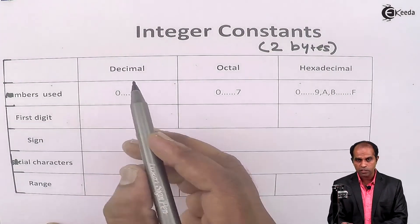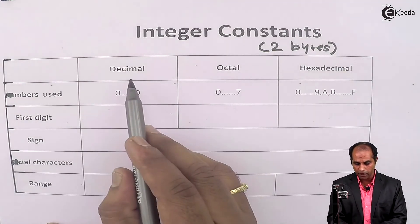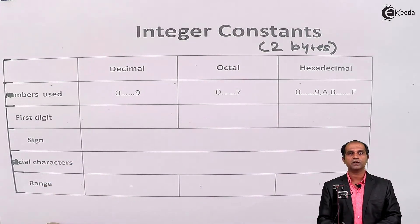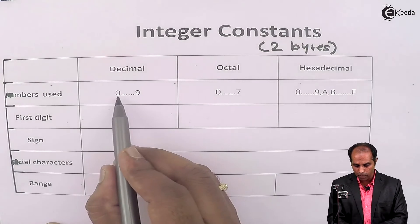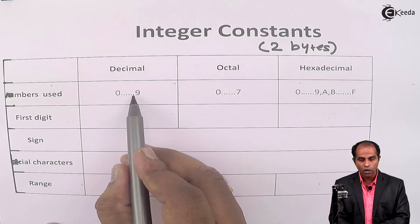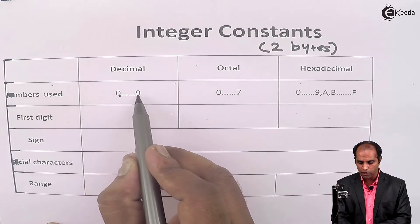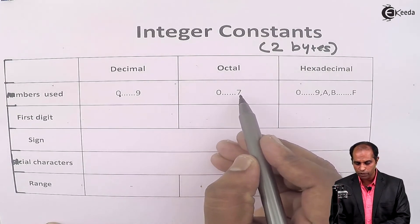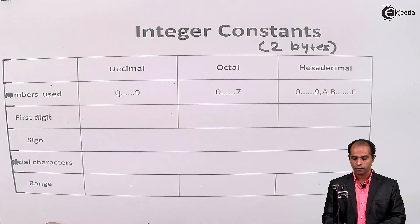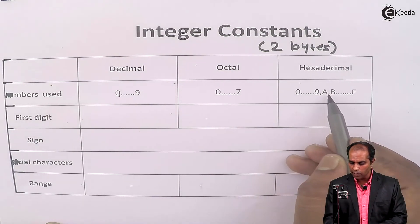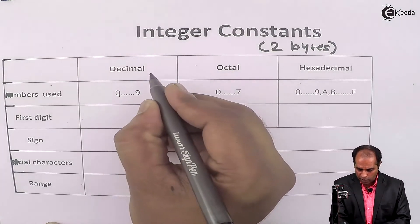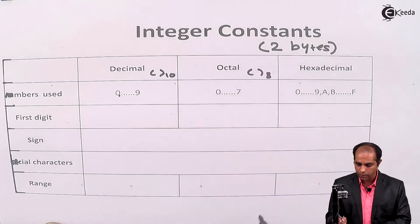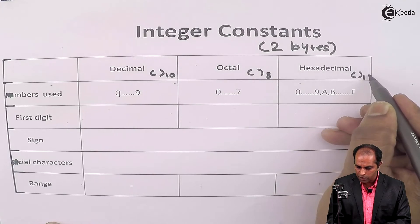How do we identify a constant in C language — whether it is decimal, octal, or hexadecimal? It depends on the digits used. If a constant is represented using digits from 0 to 9, we call it a decimal integer constant. If a constant is made up of digits 0 to 7, we call it an octal integer constant. If it uses 0 to 9 and A to F, we call it a hexadecimal constant. Decimal is base 10, octal is base 8, and hexadecimal is base 16.